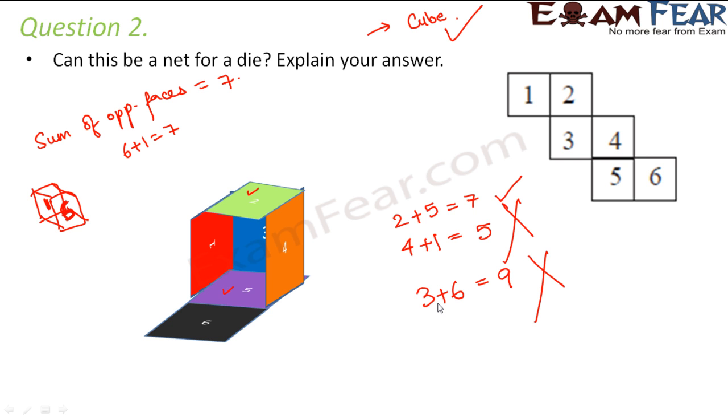In what case would it have been a die? In case we could have interchanged four and six. Maybe six would have been here in place of four, and four would have been here in place of six. In that case it would have been a die, because then six plus one would have been seven, and four plus three would have also been seven. If the orange and black pieces had been interchanged, it would have been a die. But currently, it cannot be a net for a die.